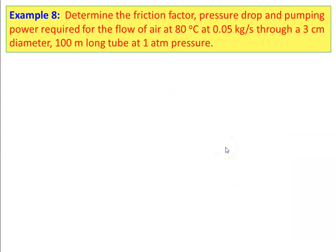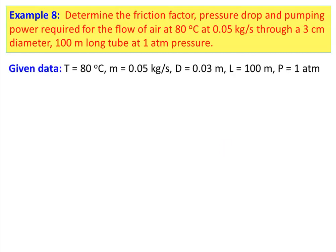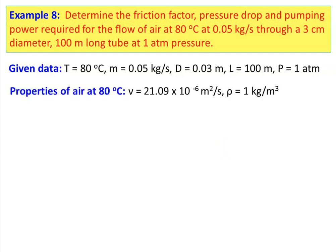Example number 8: Determine the friction factor, pressure drop, and pumping power required for the flow of air at 80°C at 0.05 kg/s through a 3 cm diameter, 100 m long tube at atmospheric pressure. Given data: temperature 80°C, mass flow rate 0.05 kg/s, diameter 0.03 m, length 100 m. Properties of air at 80°C: kinematic viscosity = 21.09 × 10⁻⁶ m²/s, density = 1 kg/m³.